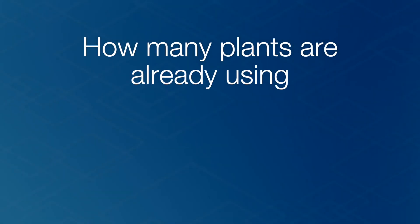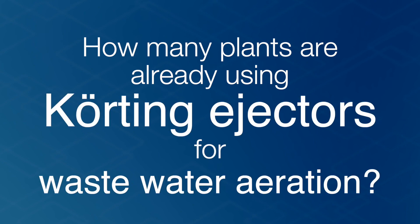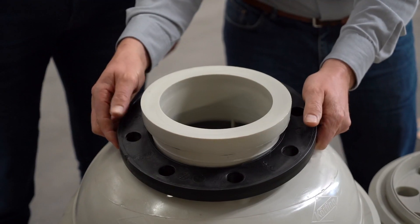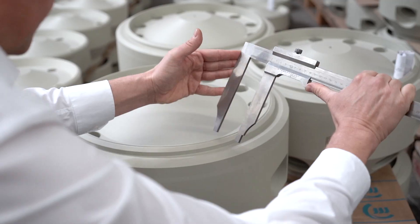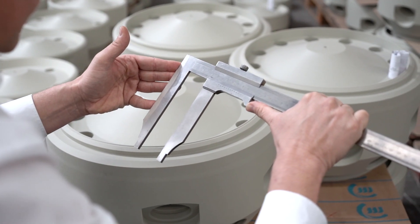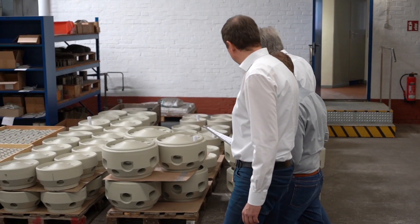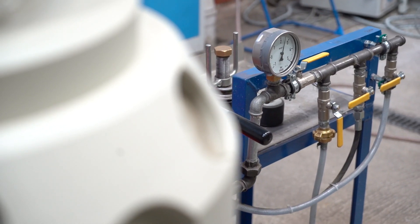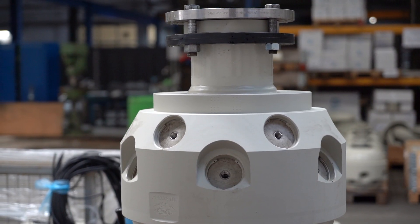Ejectors can be used for both new plants and revamping old ones. Over the past 25 years, more than 1,000 plants have been fitted with Kerting ejectors worldwide. Kerting ejectors are constantly enhanced by an in-house development department. Oxygen transfer measurements are carried out in both clean water and wastewater, resulting in a product that evolves with customer requirements.